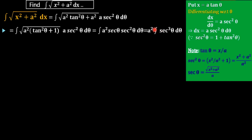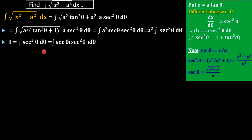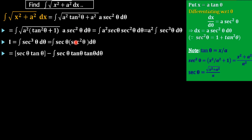Now we are taking I as the integral of sec cubed theta. So what we have done so far: we take x equal to a tan theta and we get the function as a squared into the integral of sec cubed theta. So we have to find the integral of sec cubed theta, and we are taking it as I. So I equals the integral of sec cubed theta dθ. We are going to perform integration by parts, taking sec theta as u and sec squared theta as v.